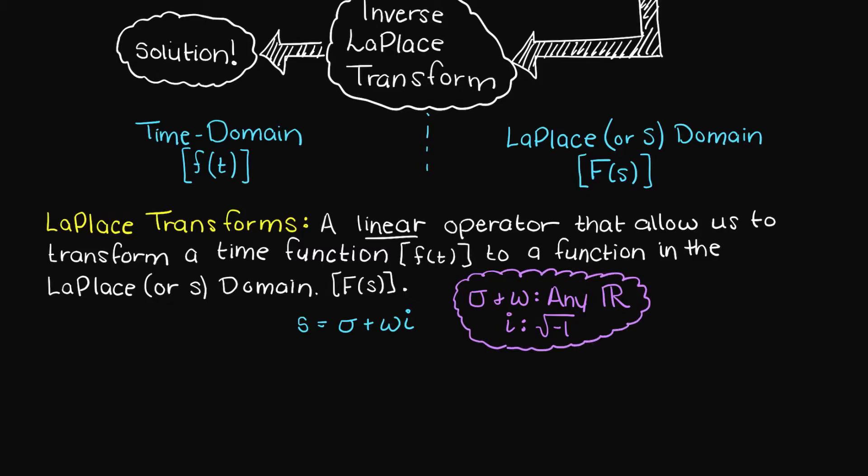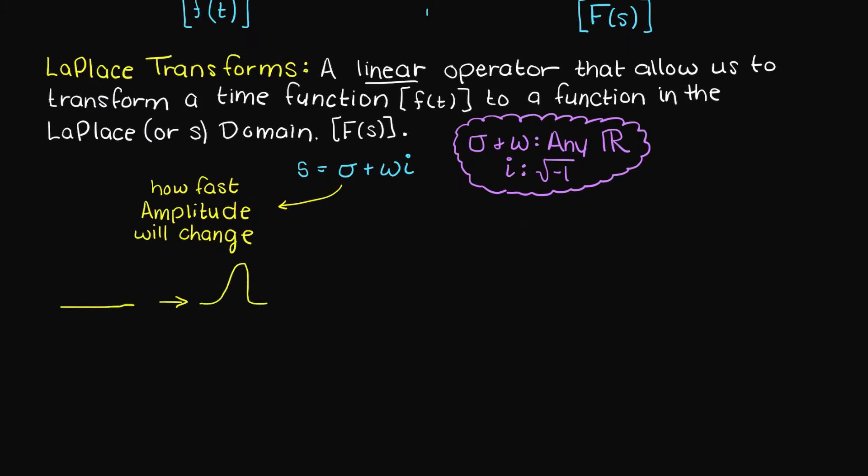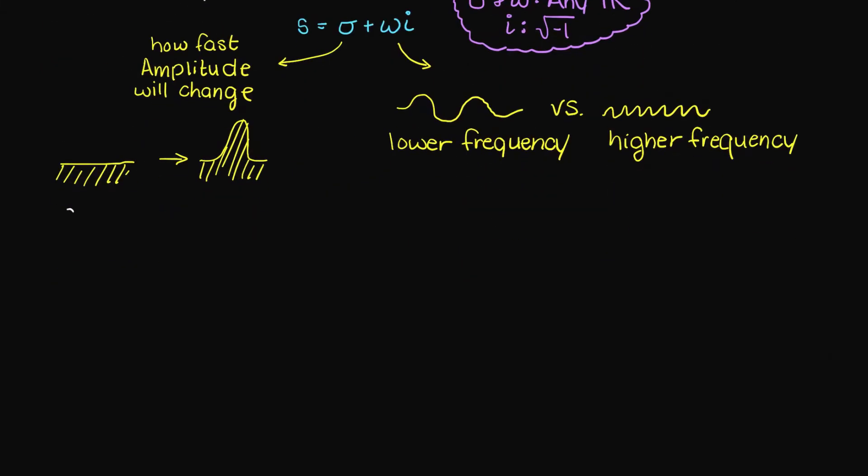But what does sigma and omega even mean? Well, sigma essentially tells us how fast the amplitude will change, think of this as the height of a wave in the ocean, and the omega portion of s determines the frequency at which our function oscillates, so basically how often the wave of the ocean will hit you if you were standing in place. Therefore, as a whole, the s term tells us how stable our function is. We will talk more about stability in future videos, this is just to give you a rough idea.